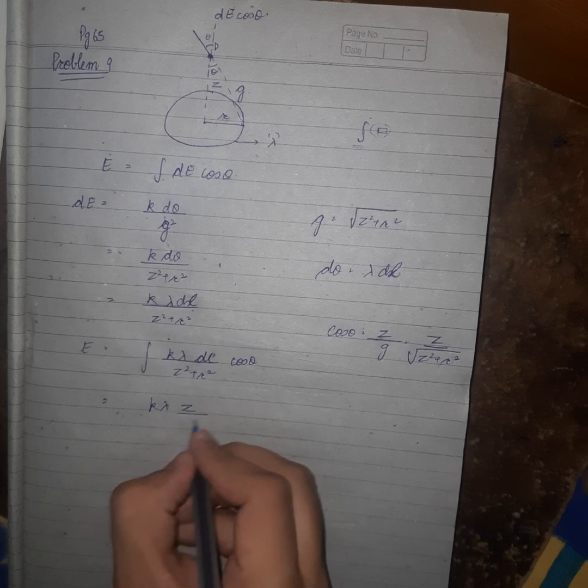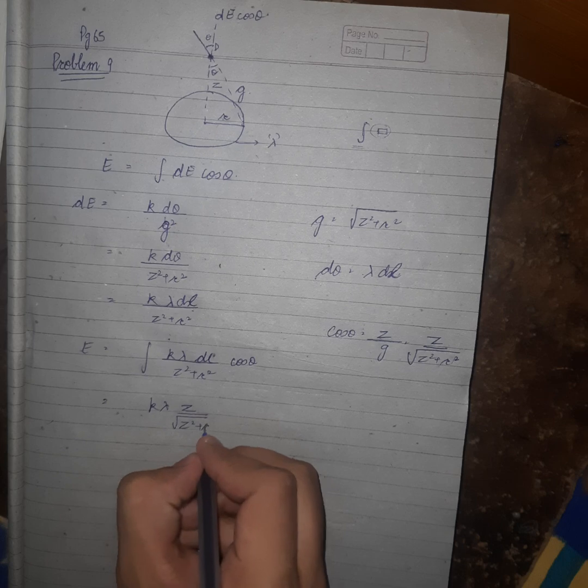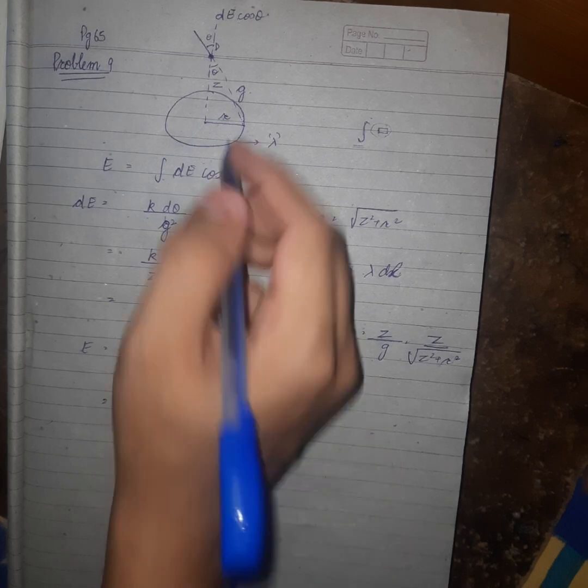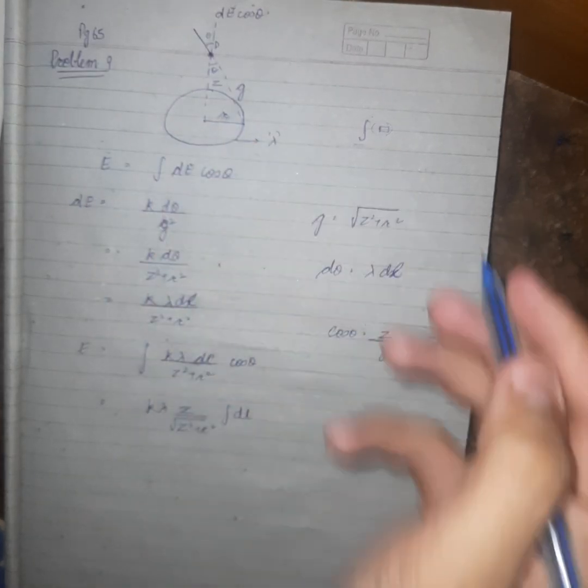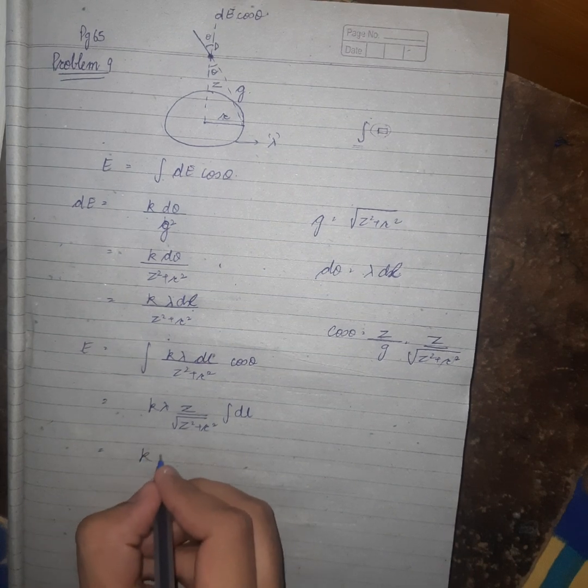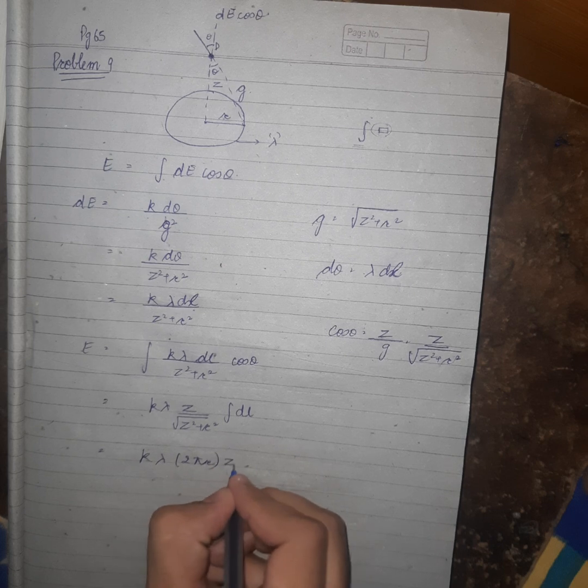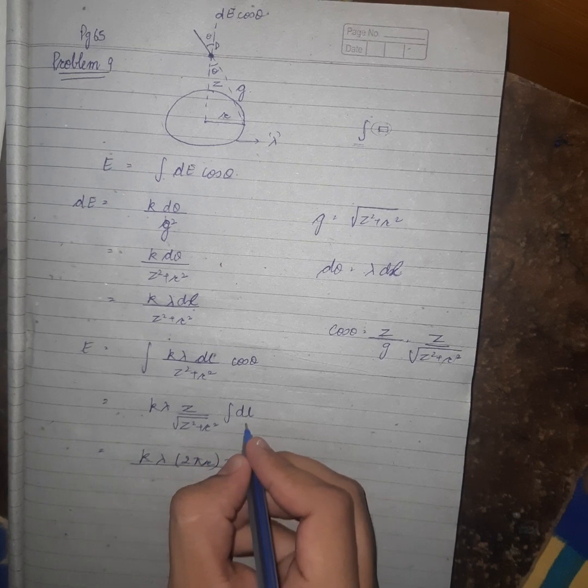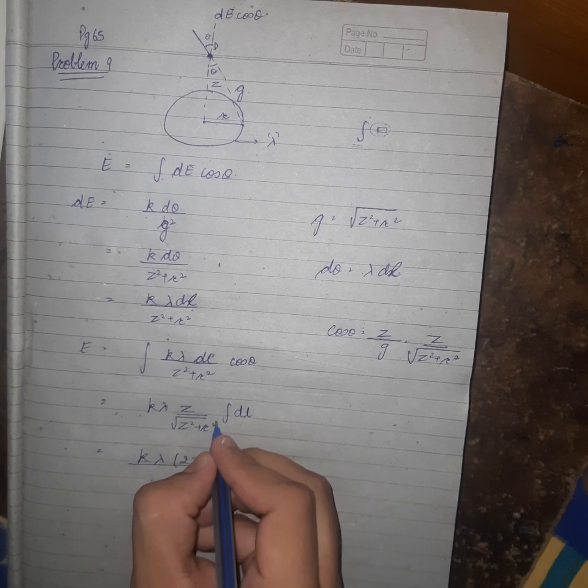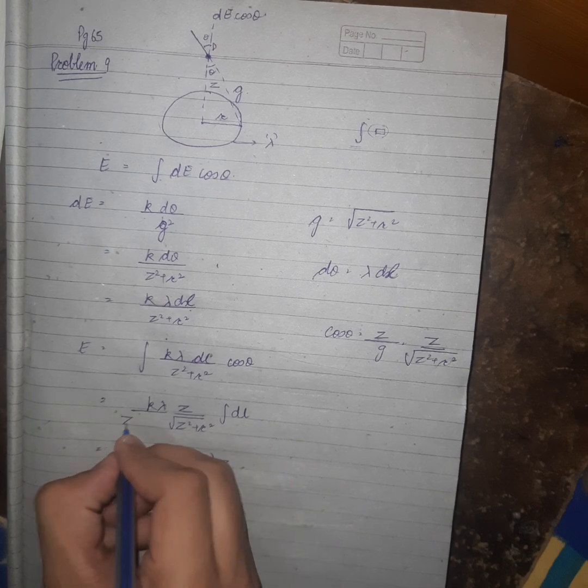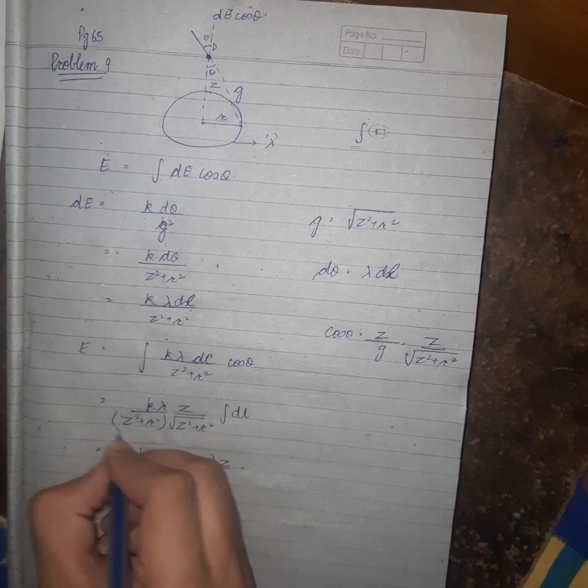k lambda cos theta is this, and z upon under root z square plus r square, integration dl. As this is a circular loop, dl will give us 2 pi r. k lambda into 2 pi r into z upon... this is multiplied by z square plus r square, I forgot. z square plus r square 1 plus 1 by 2 is 3 by 2.